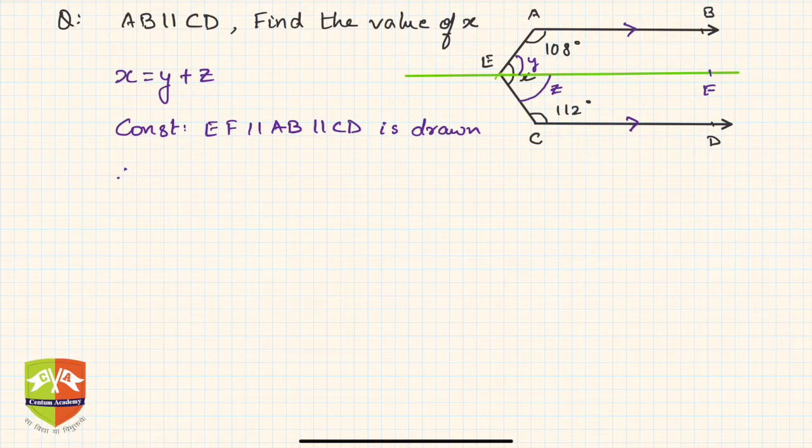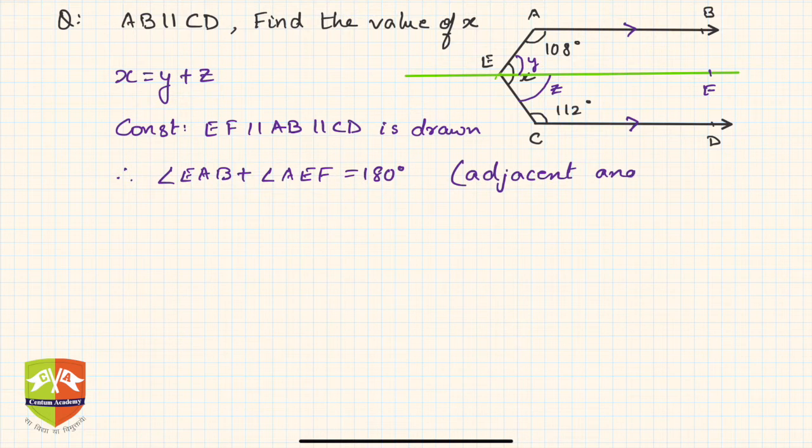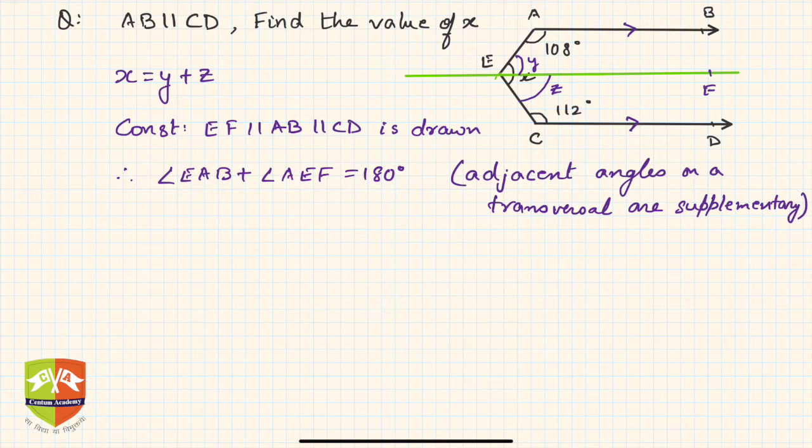Therefore, angle EAB plus angle AEF will be equal to 180 degrees. Why? Because adjacent angles on a transversal are supplementary. So 108 degrees, which is EAB, plus y is 180 degrees. So y clearly is 180 degrees minus 108 degrees, which is 72 degrees.